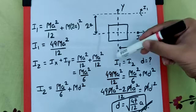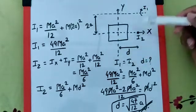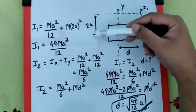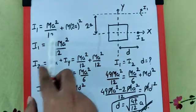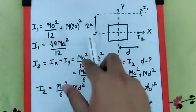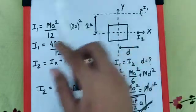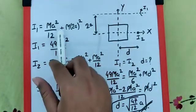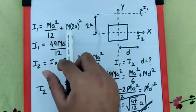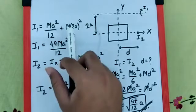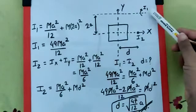Now we need to understand that I1 over here we can calculate by using parallel axis theorem. So I1 will be IX plus MH square where H is 2A. So IX will be MA square by 12, considering this square as a rod for which X axis is the axis passing through its center. So MA square by 12 plus M times H square where H is 2A, so M times 2A the whole square. This becomes 4MA square; 12 into 4 is 48 plus 48 plus 1 is 49MA square by 12. So we got the value of I1.